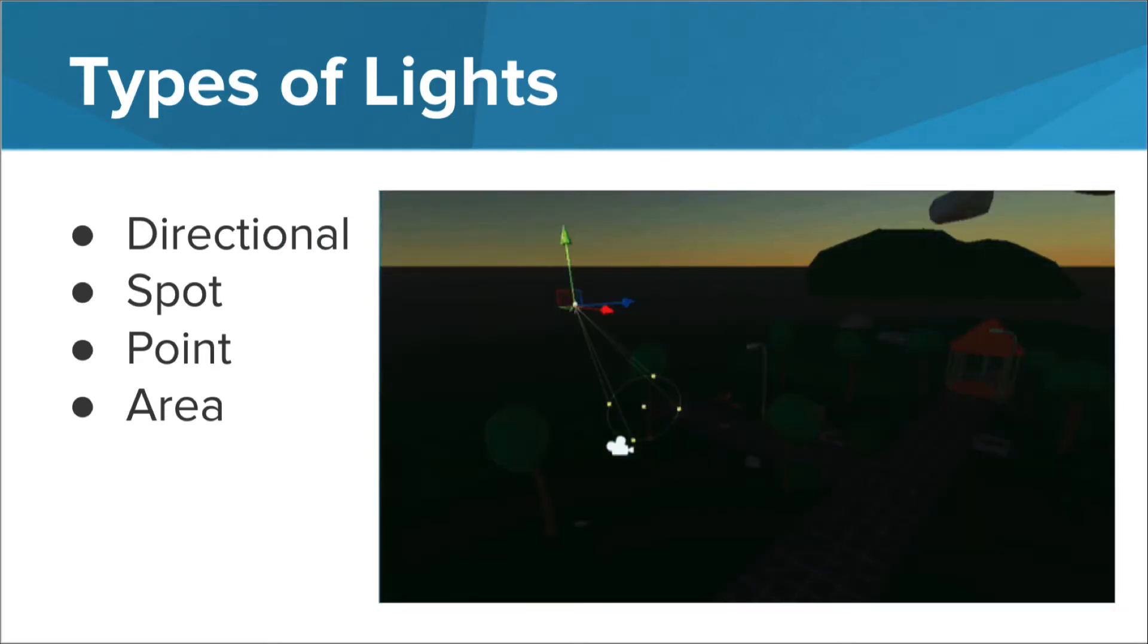There are four types of scene lights available to use in Unity: Directional, Spot, Point, and Area.